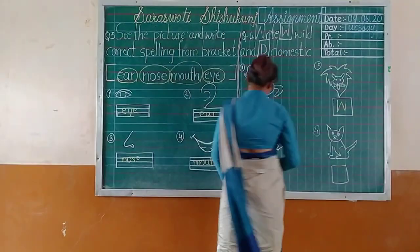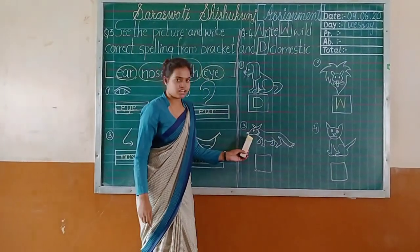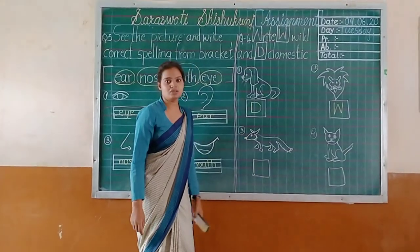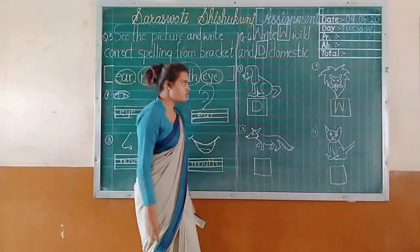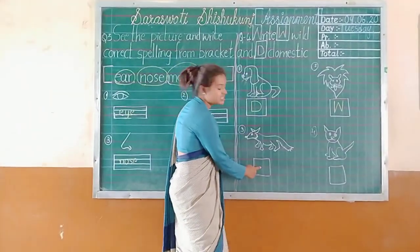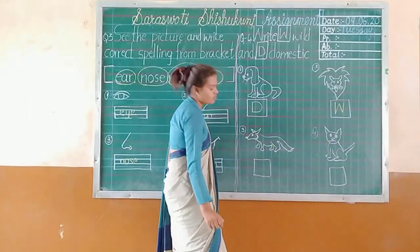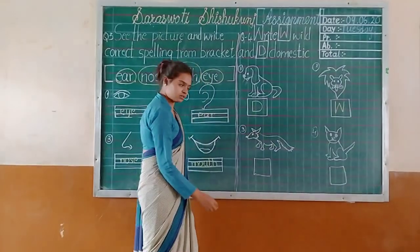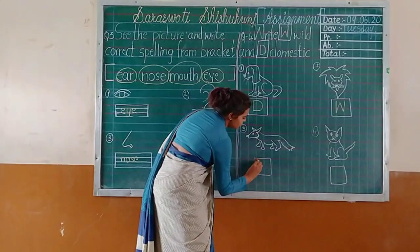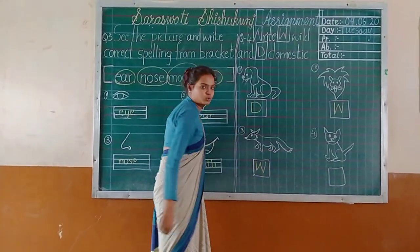Next — which animal is it? Can you guess? Fox. Is the fox domestic or wild? Fox is wild. So write capital W.